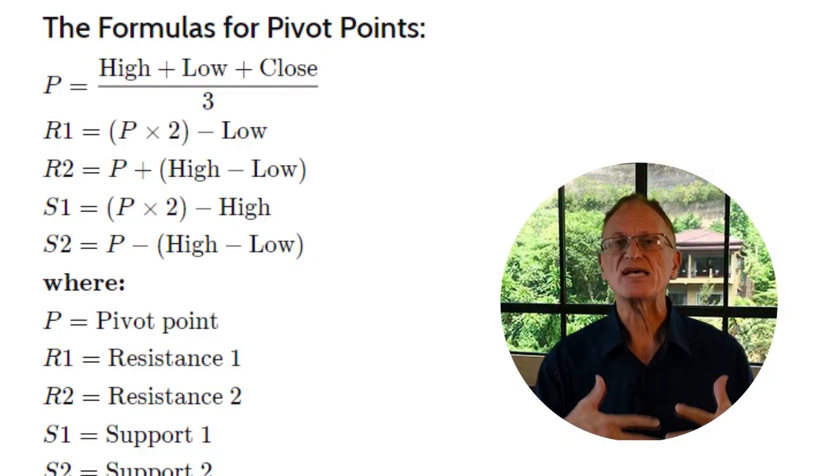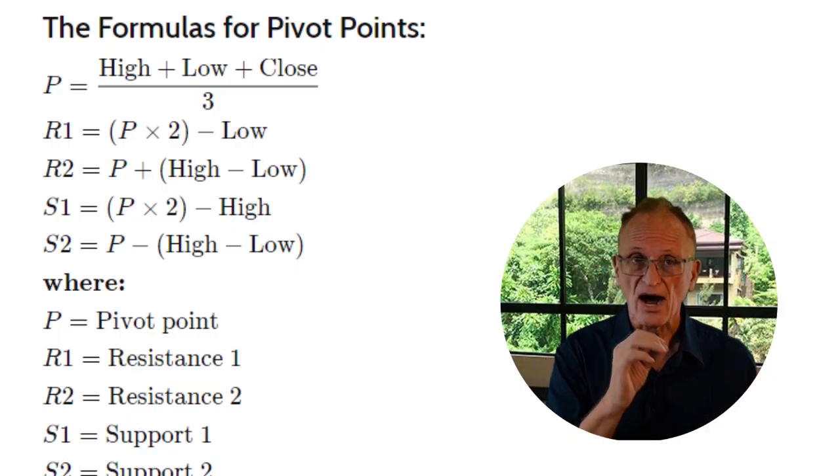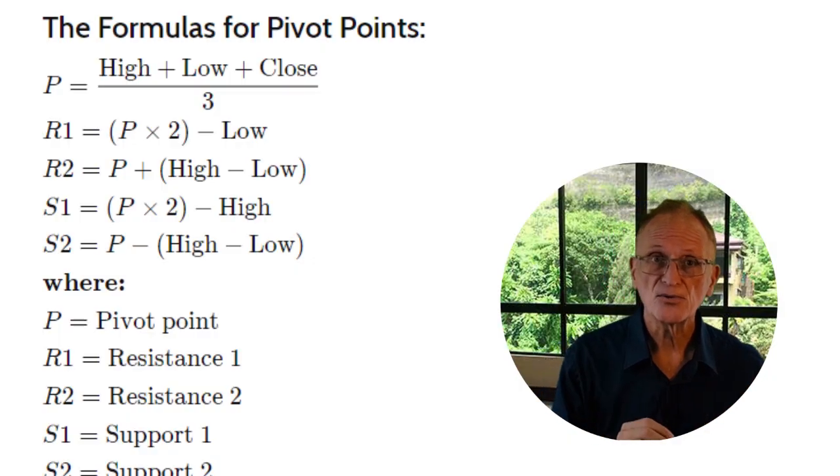Pivot points themselves are a simple calculation based on the average of yesterday's high, low, and closing price. That's what a pivot point is: a simple average of yesterday's high, low, and closing price. This gives a simple reference where trading above that price is considered bullish and trading below that price is considered bearish.